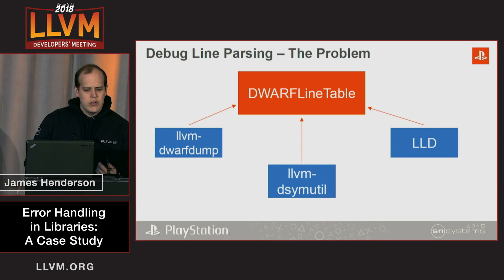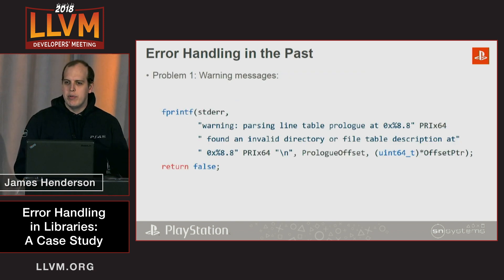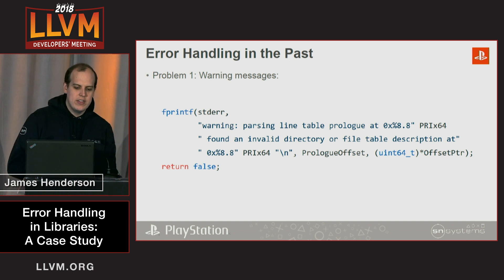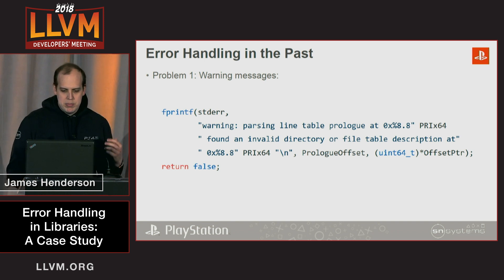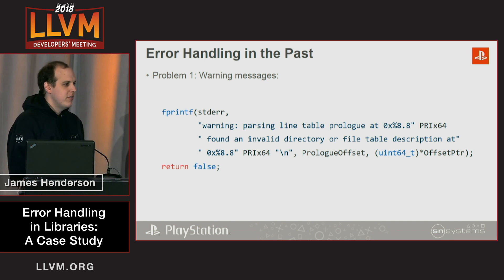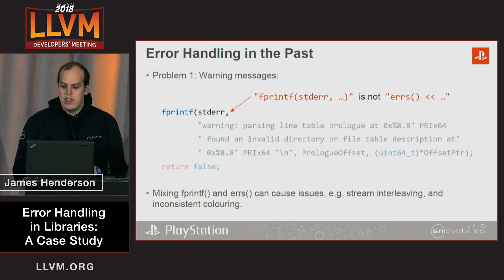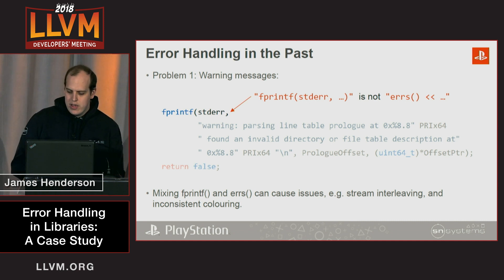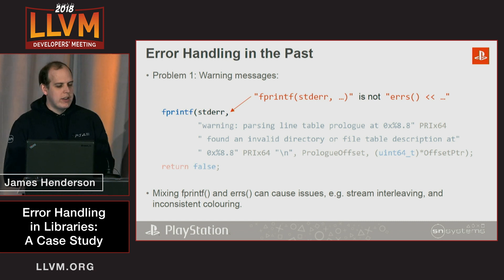Let's look at one of the concrete examples. The code samples you'll see are taken from either before or after the changes I made about six months ago. In this specific case, we're looking at a warning message printed using fprintf to stderr directly. After we print the warning, we then return false. However, there are some problems with this. fprintf to stderr is not the same as printing to the error stream — you end up with stream interleaving and potentially inconsistent coloring depending on how the rest of the program is written.